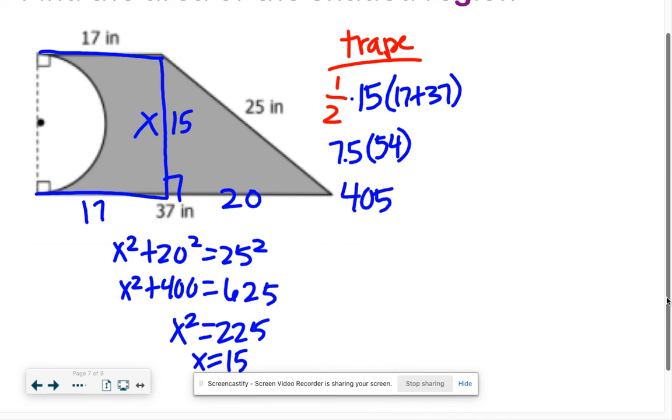Now let's find the area of the circle. It's a half circle, so let's find the area of the whole circle divided by 2. Pi, your radius would be half of 15, so 7.5 squared, all over 2.